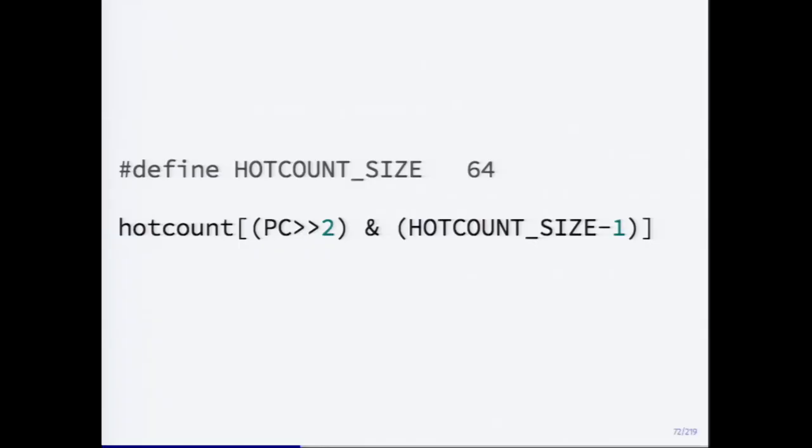The hot count table is rather small — only 64 entries — which leads to non-determinism: depending on how bytecodes are allocated in memory, they can clash in different ways, meaning something might get optimized before something else. But since life is non-deterministic anyway, this is not really a big problem. It's a 'sooner or later' thing — instructions that have been optimized stop counting, so sooner or later everything that is hot, even if it clashes, will eventually be optimized.